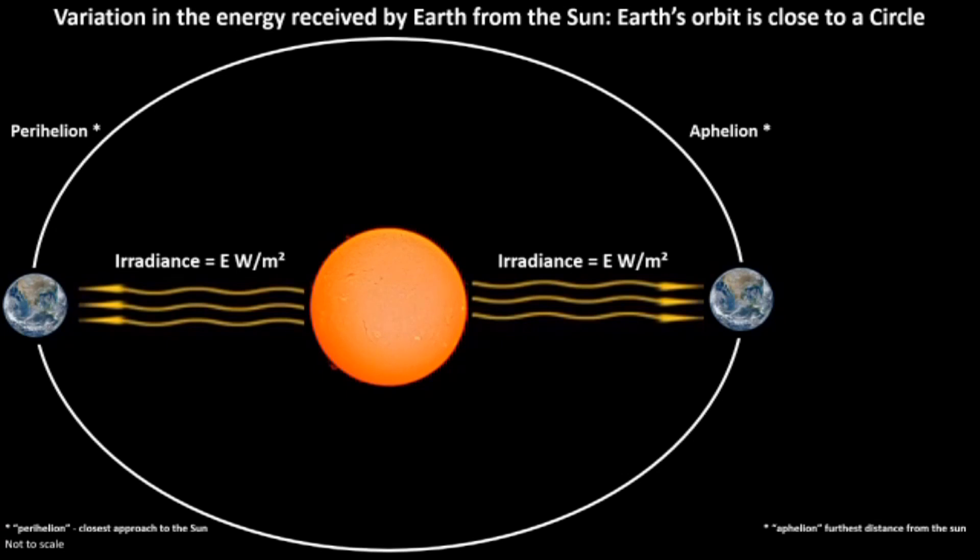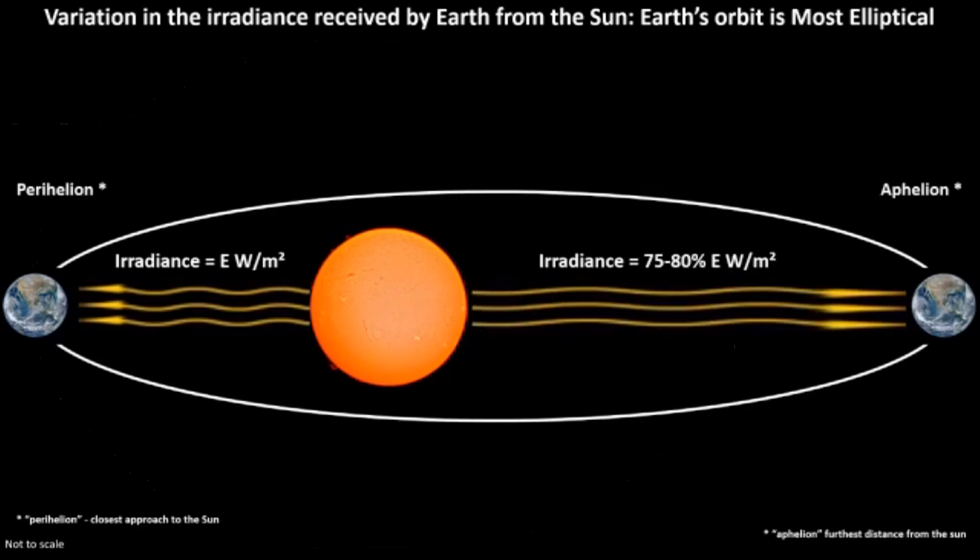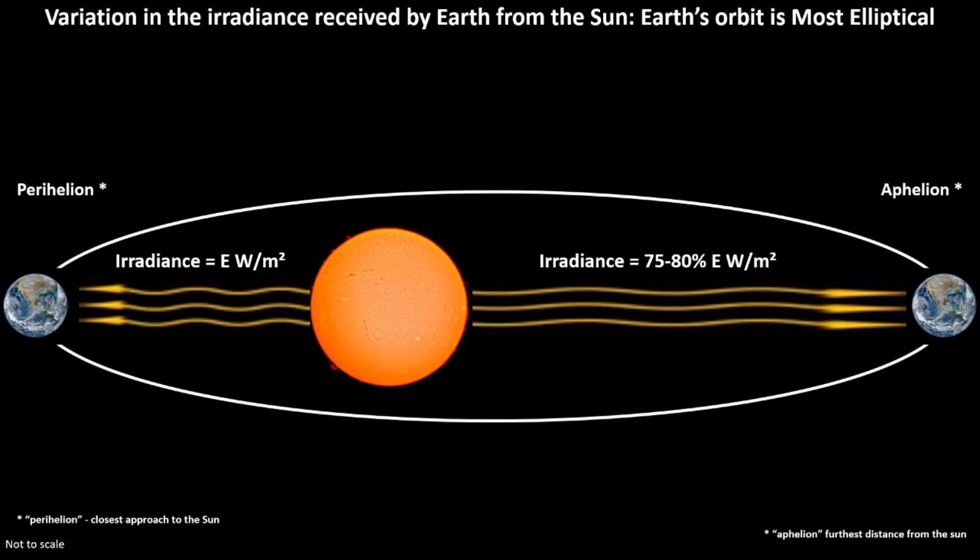When the orbit is that of almost a circle, the difference in irradiation received by the Earth at any point in its orbit throughout the cycle is very little. But when the orbit is at its most elliptical, then the energy received when the Earth is furthest from the sun is around 20 percent less than when the Earth is closest to the sun. This cyclic reduction in irradiance over thousands and millions of years, combined with the other factors of the causal network noted earlier, contributed to the gradual reduction in global temperature.